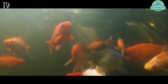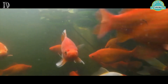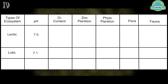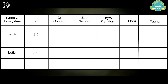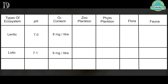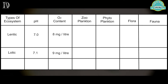Both kinds of water are suitable for growing experimental fish. In the Lentic ecosystem, the pH was 7, which is equal to neutral pH. The Lotic system water has a pH of 7.1. The dissolved O2 content of the Lentic ecosystem was 8 milligrams per liter, and in the Lotic system the dissolved O2 content was 9 milligrams per liter.